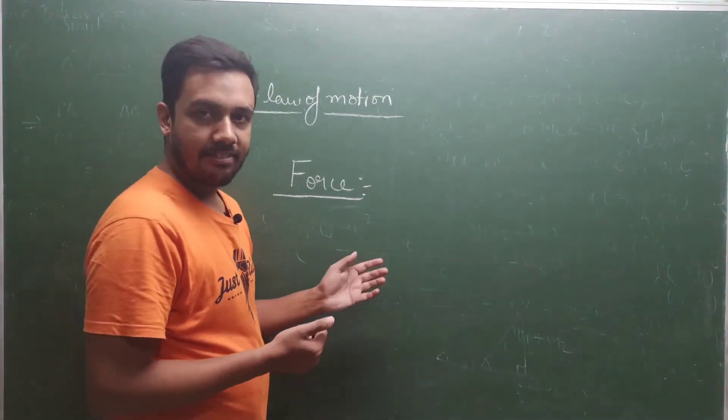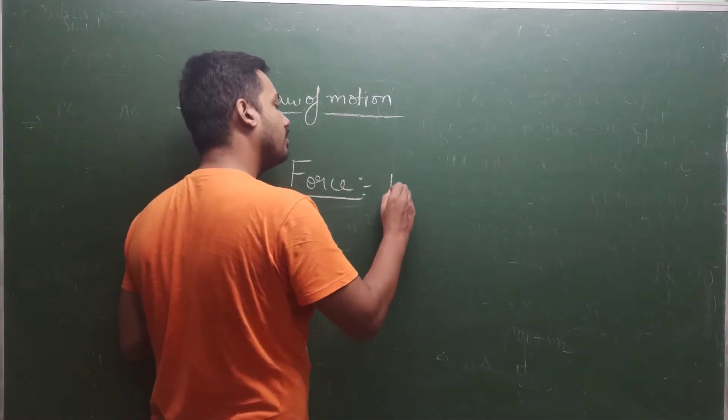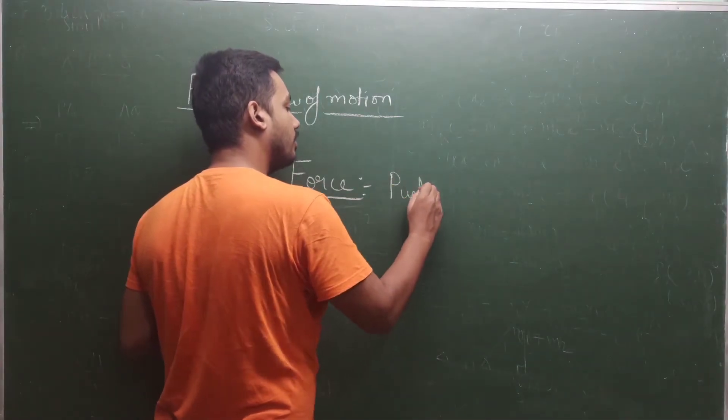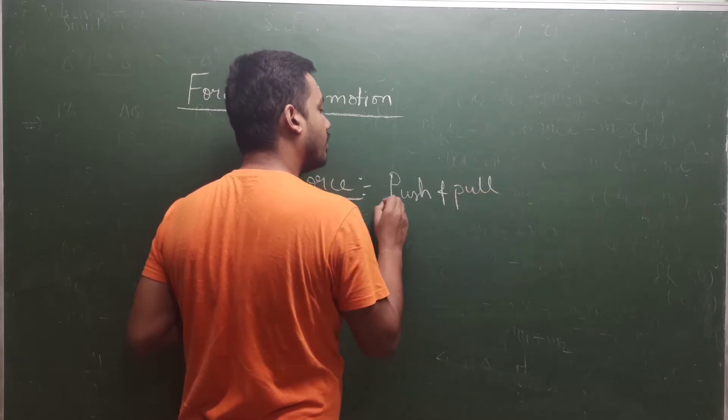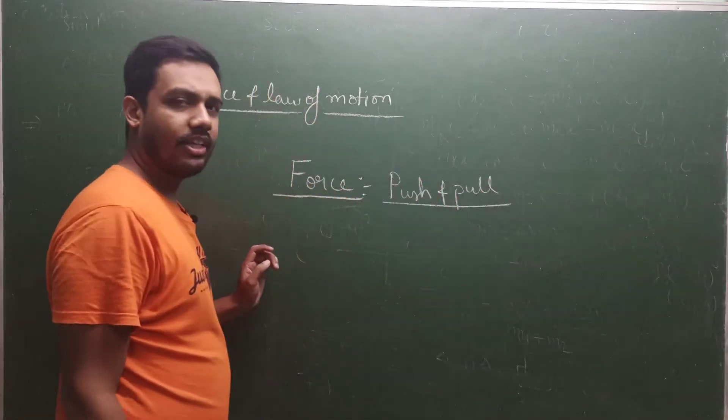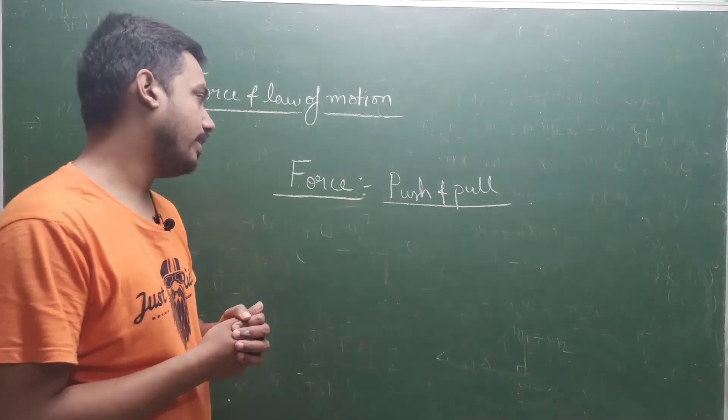Why does the velocity change? Because we apply force on the object. Now let's talk about force definition. The definition is very simple: all the push and pull are force. This is a very basic definition that we have read in the previous classes as well.